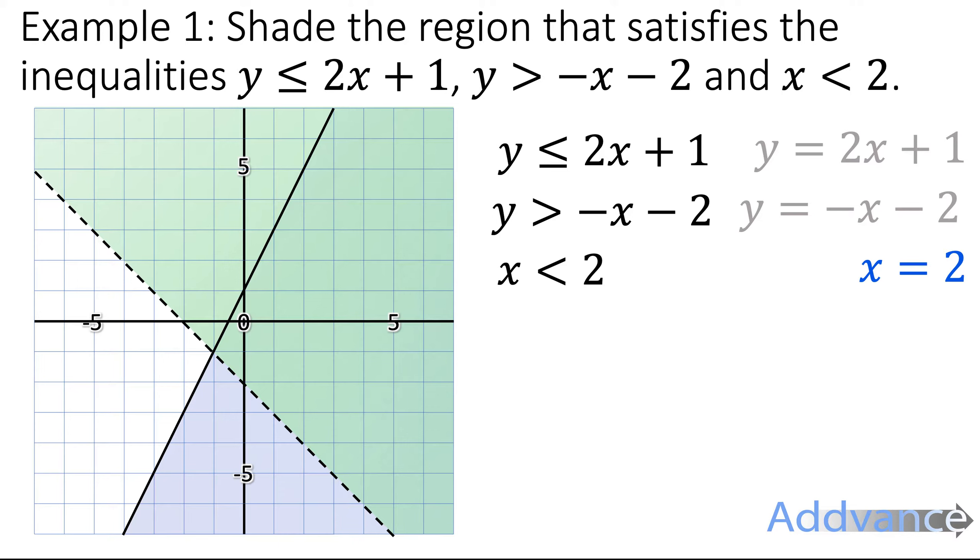Finally, we've got x is less than 2. So we're going to graph x = 2. We're using a dotted line because it's not less than or equal to, it's just less than.